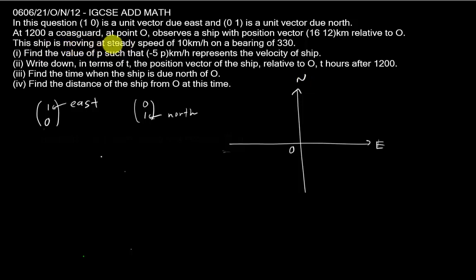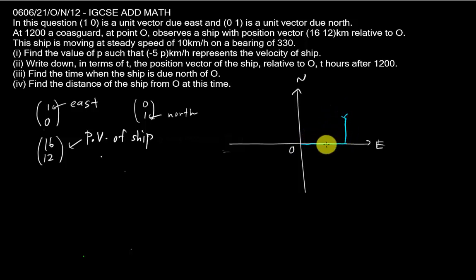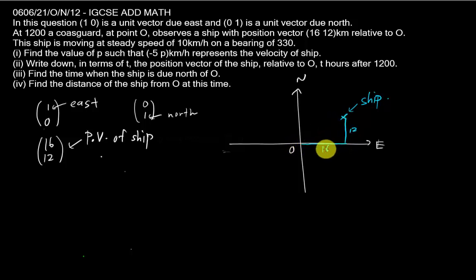At 12 pm, a coast guard at point O observes a ship with position vector (16, 12) km relative to O. That means the ship is at this position vector — 16 units to the east and 12 units to the north. This is the position vector of the ship, always measured relative to the origin.